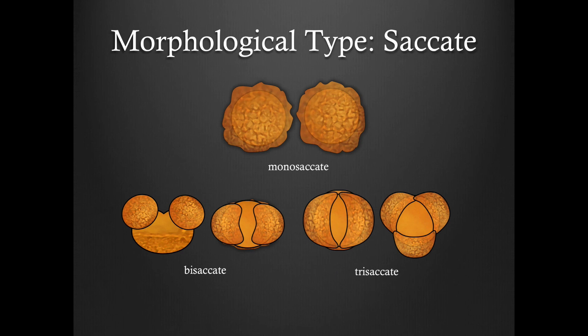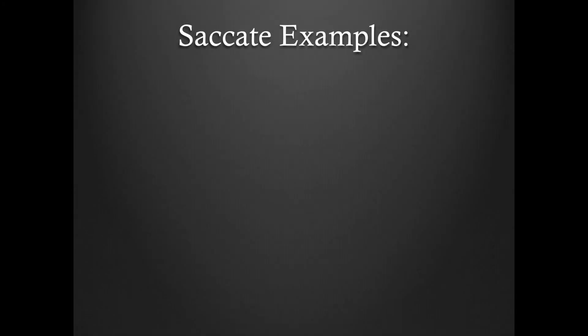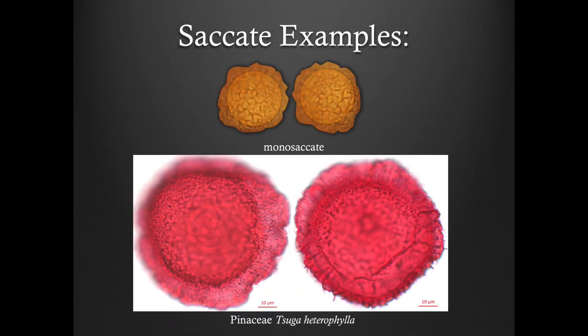The final morphological type that we will discuss today is saccate. This category can then be further classified as monosaccate, bisaccate, or trisaccate. Now take a moment to look at an example for each of the categories of saccate.